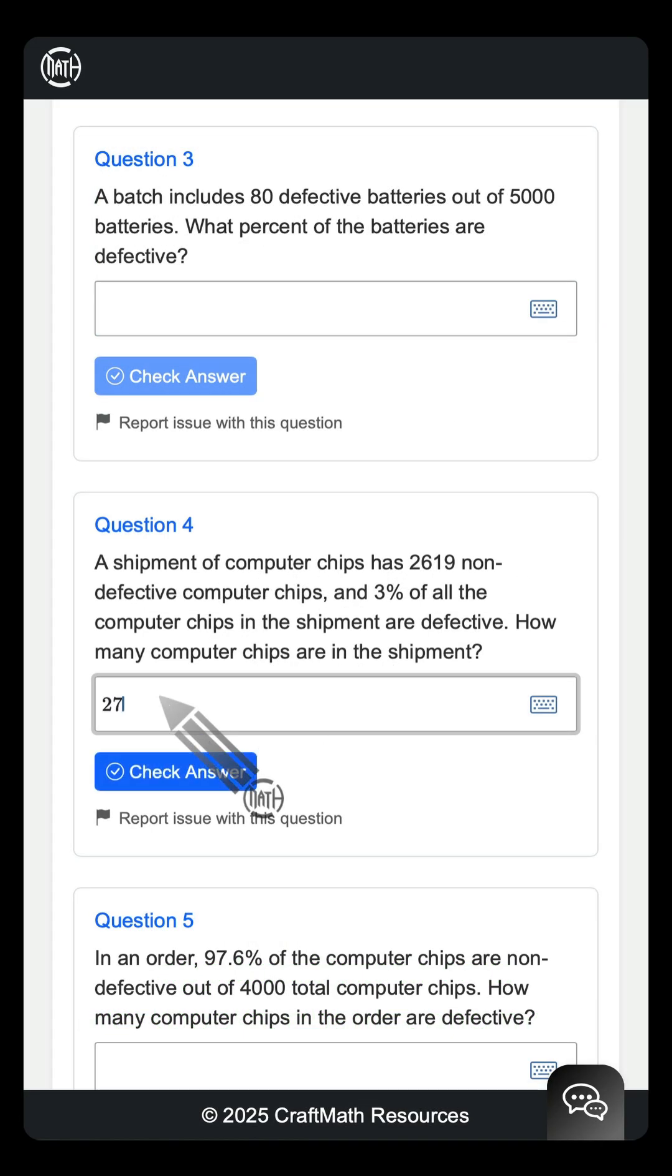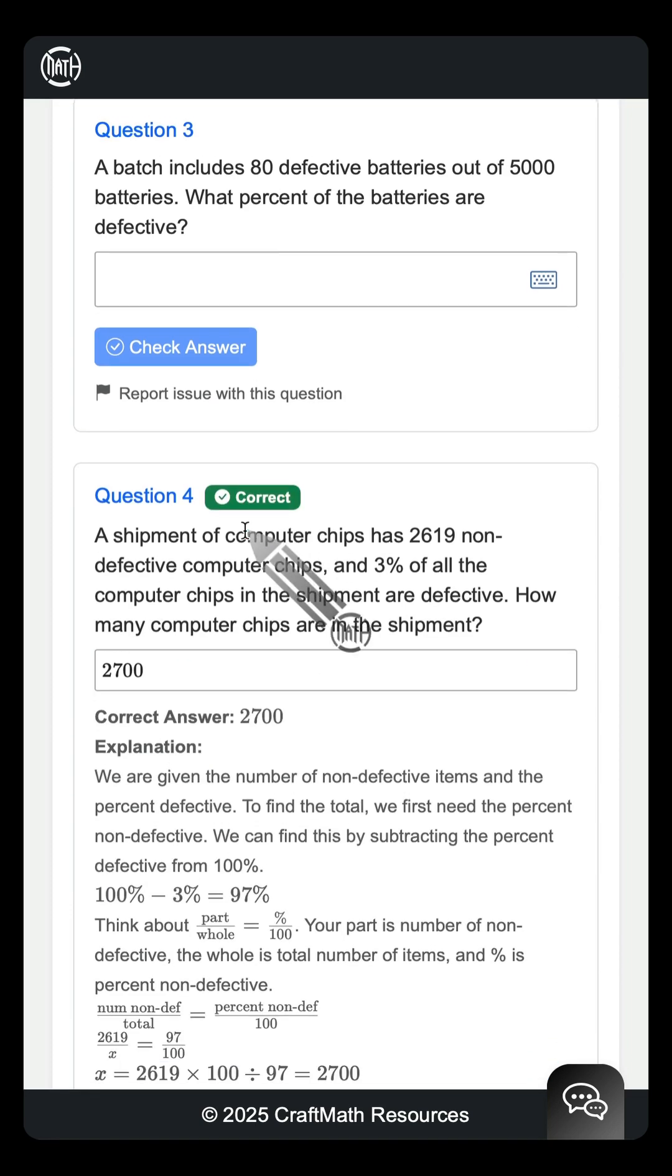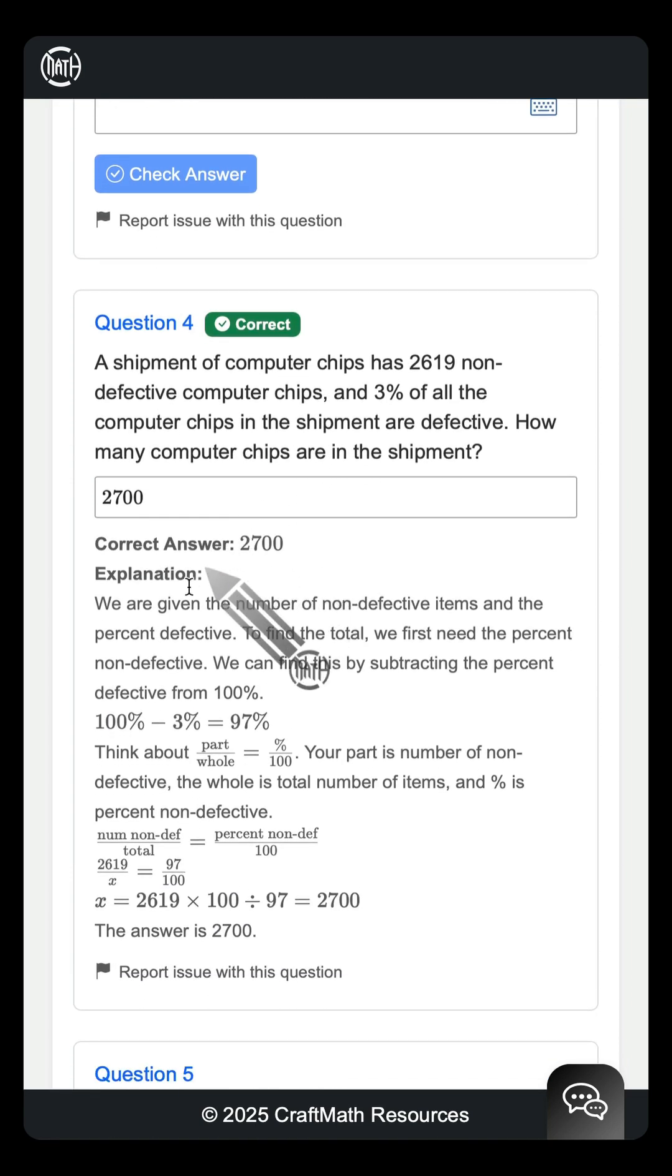And if we come back to the infinite Q bank and we type in our answer of 2700, that's the total number of computer chips. Let's check it. Instant feedback. Check it out. We get it correct. And we have an explanation here that is somewhat similar to what I just showed you a moment ago.